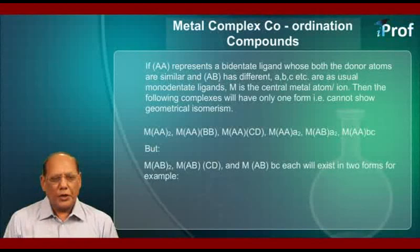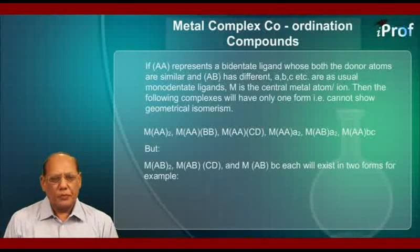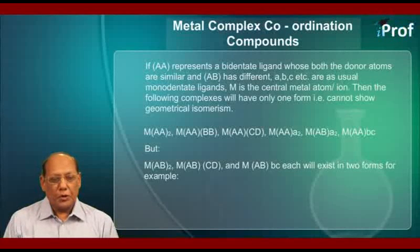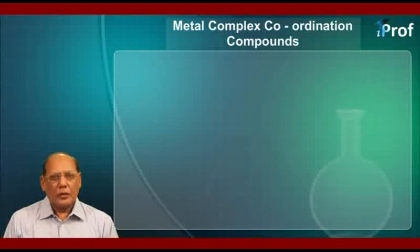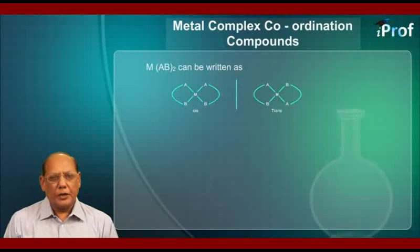Complexes that cannot show geometrical isomerism include: MAA2, MAABB, MAACD, MAA(a)2, and MAA(bc). But MAB2, MABCD, and MAB(bc) each will exist in two forms. For example, MAB(b)2 can be written as the cis and trans form as shown here.